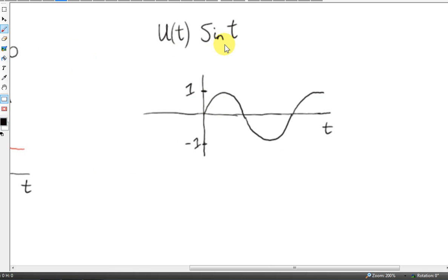Here is another example of a causal function. It's the function u of t multiplied by sine of t. If we just looked at sine of t, of course, it is defined for negative values of t. It would look like this.